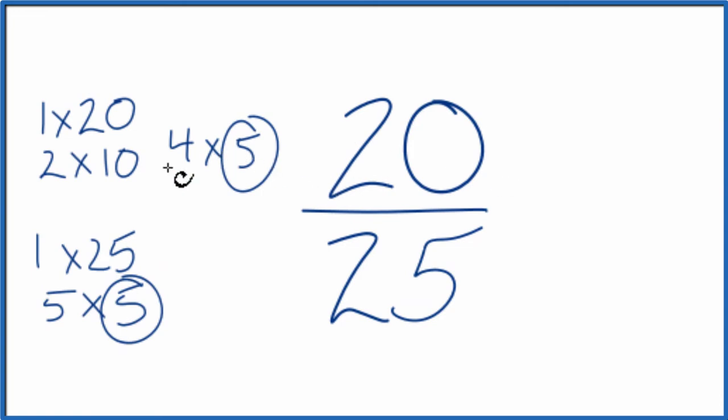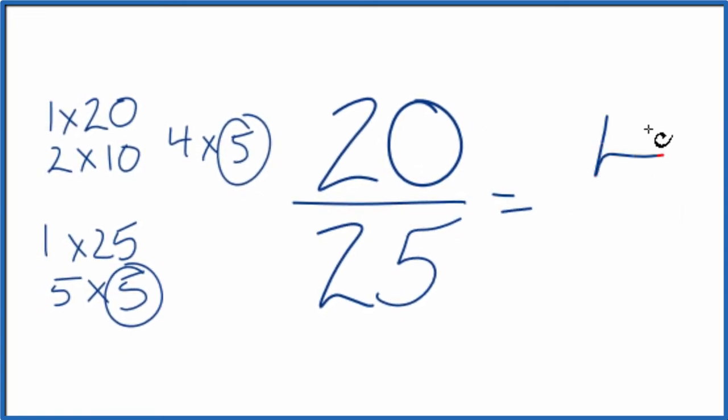20 divided by 5 gives us 4, and then 25 divided by 5 gives us 5. We've simplified 20 over 25 down to 4 over 5.